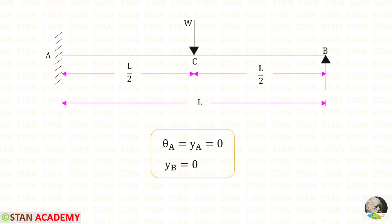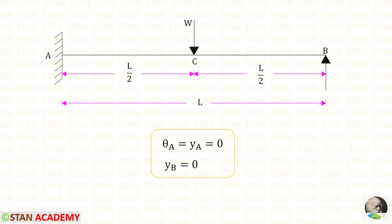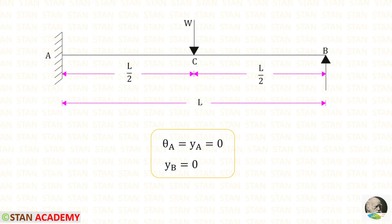In this beam, point A has a fixed support, so slope and deflection at A are both 0. Point B has a vertical support, so there is no deflection at B but there will be slope. We are going to find the slope at point B and the slope and deflection at the center C using Macaulay's method.